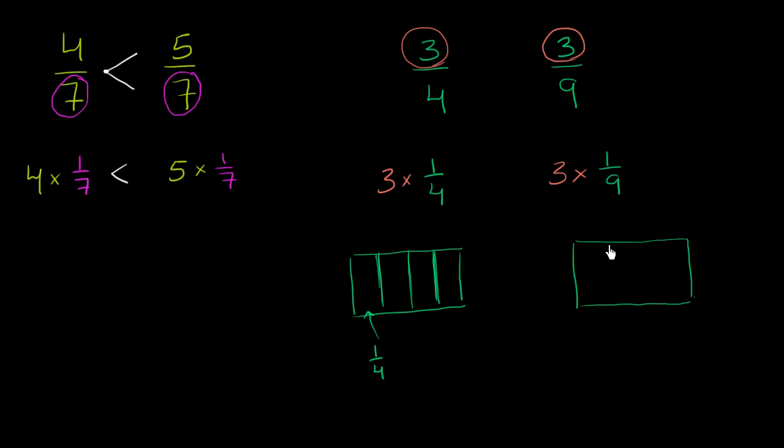And let me draw ninths here. So let me first put this into three equal sections. So those would be thirds. And then split each of those into three equal sections. So this is my best attempt at hand drawing nine equal sections, splitting the whole into nine equal sections.